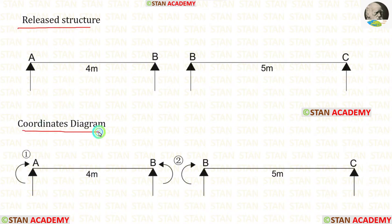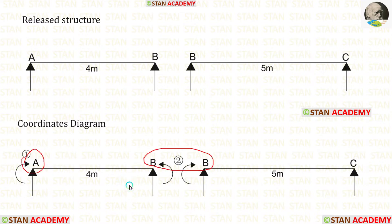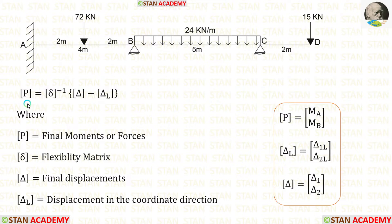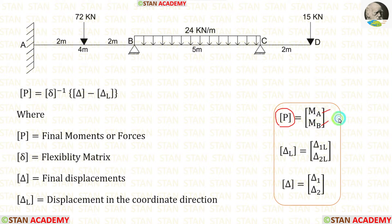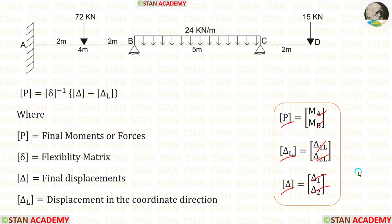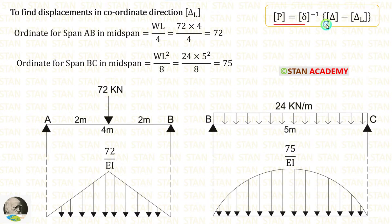Now let us make the coordinates diagram. In this analysis there are 2 coordinates, located at point A and point B, because at these points we have removed the moments. We know the formula for calculating the final moments: P matrix equals delta matrix inverse multiplied by the quantity delta matrix minus delta L matrix. Inside the P matrix we will have MA and MB, and both the delta L matrix and delta matrix will have 2 values.